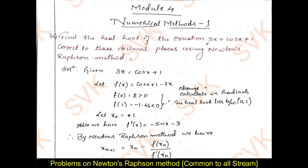The given problem is 3x equal to cos x plus 1. Consider that and define the function as f of x. By shifting this term to the right-hand side, it becomes minus 3x. Therefore, f of x equal to cos x plus 1 minus 3x.